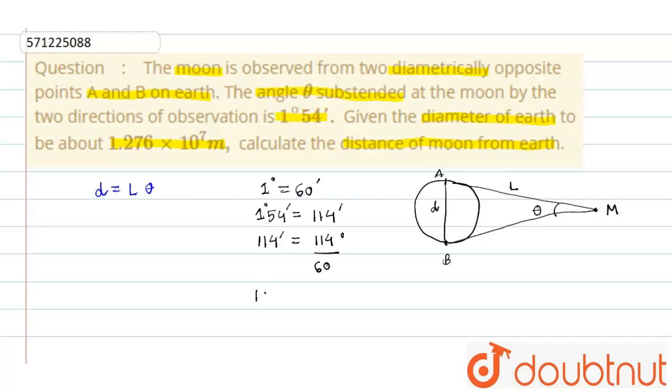We also know that 180 degrees = π radians. So 1 degree = π/180 radians. Therefore, 114/60 degrees = (114/60) × (π/180) radians.